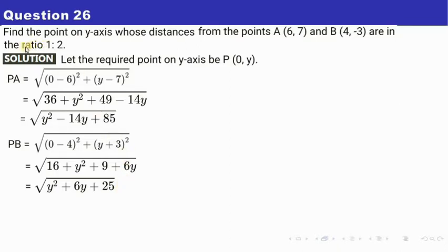Now it is given that the ratio between PA and PB is 1 is to 2. Find a point on the y axis whose distance from A that is PA and PB are in the ratio 1 is to 2. So according to equation we have PA by PB equals to 1 by 2.